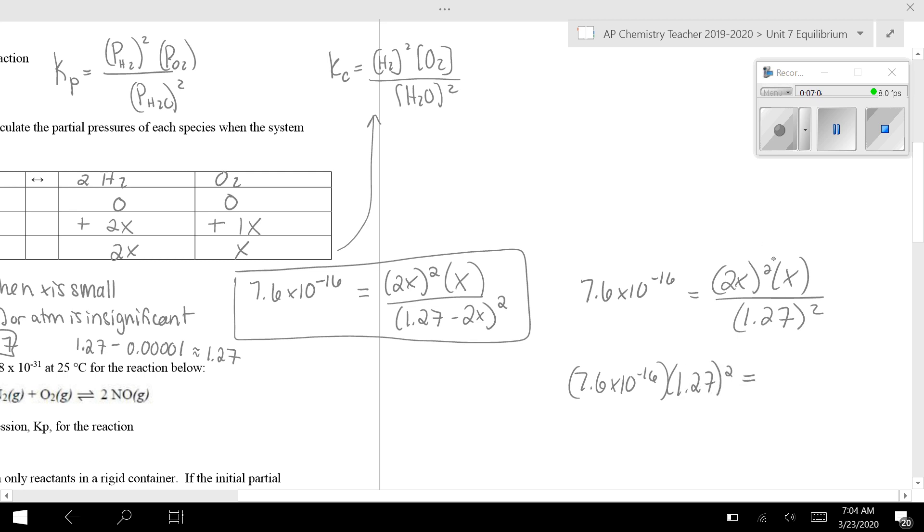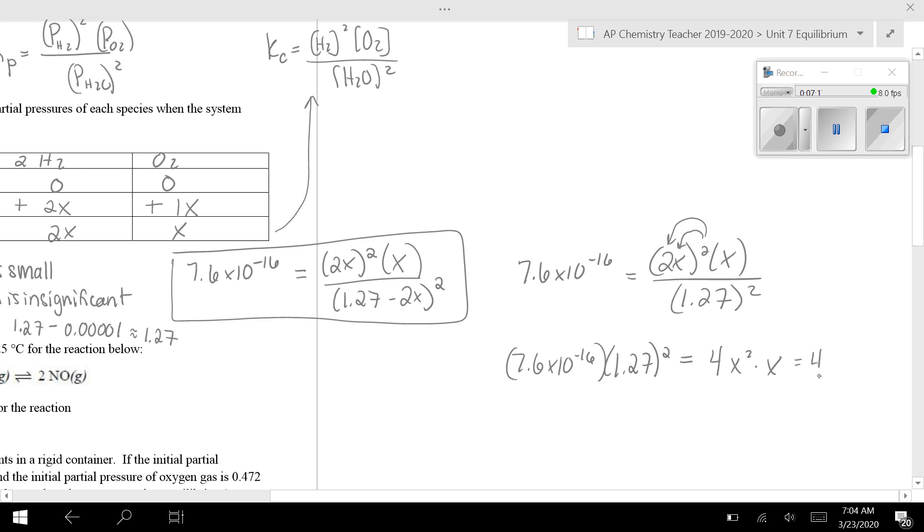Over here, when you simplify this, don't forget to like distribute the squared here. So it's 2 squared and X squared. So 2 squared is 4. And then X squared is X squared times X, which is the same thing as this is 4X cubed.